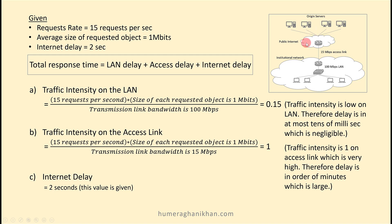Total response time consists of three delay components: LAN delay, access delay, and internet delay (given as 2 seconds). For the LAN: 15 requests/sec × 1 Mbps / 100 Mbps gives a traffic intensity of 0.15, meaning only 15% utilization — a very low value, so LAN delay is at most tens of milliseconds and is negligible.